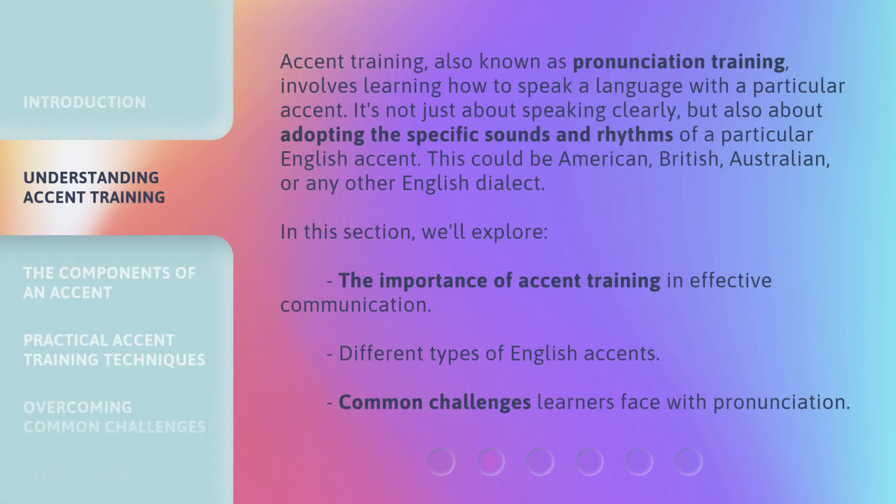Accent training, also known as pronunciation training, involves learning how to speak a language with a particular accent. It's not just about speaking clearly, but also about adopting the specific sounds and rhythms of a particular English accent. This could be American, British, Australian, or any other English dialect. In this section, we'll explore the importance of accent training in effective communication, different types of English accents, and common challenges learners face with pronunciation.